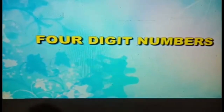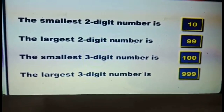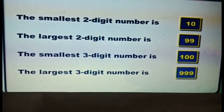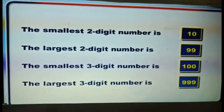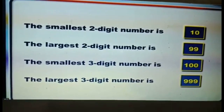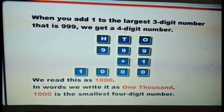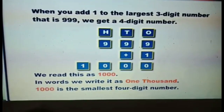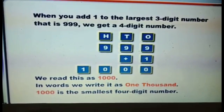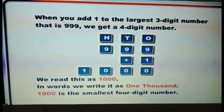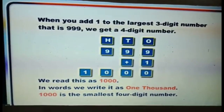4-digit numbers. As we have learned, the smallest 2-digit number is 10, the largest 2-digit number is 99, and the smallest 3-digit number is 100. The largest 3-digit number is 999. When you add 1 to the largest 3-digit number, that is 999, we get a 4-digit number. We read this as 1000. 1000 is the smallest 4-digit number.